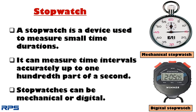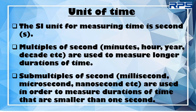A stopwatch is a device used to measure small time durations. It can measure time intervals accurately up to 100 parts of a second. Stopwatches can be mechanical or digital. The SI unit for measuring time is the second. Multiples of a second such as minutes, hours, years, and decades are used to measure longer durations of time. Submultiples of a second such as milliseconds, microseconds, and nanoseconds are used to measure durations of time smaller than one second.